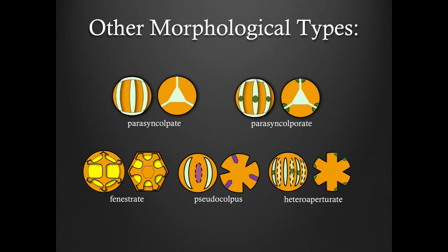Here are some more unique morphological types. Paracenculpate and paracenculporate refers to culpate or culporate grains where the culpi are split and attached to the adjacent culpi, creating a triangular shape at the pole. Finistrate, also referred to as lophate, refers to grains that have large window-like areas covering its surface. Pseudocolpate refers to a culpate-like pseudo-aperture that is present in heteroapertrate pollen grains, and it is assumed to be nonfunctional. Heteroapertrate refers to grains with two different types of apertures present on the grain — the term typically applies to pollen grains with alternating culpi and culpori, although it could also describe a grain with two different types of culpi or alternating pores and culpi.